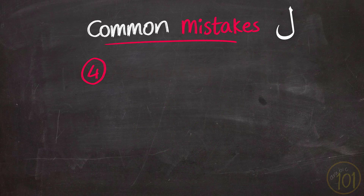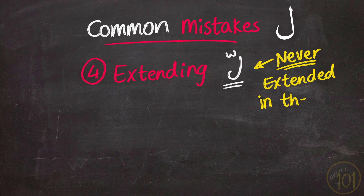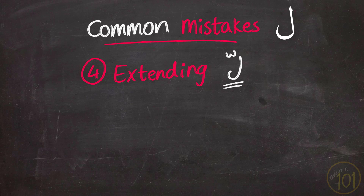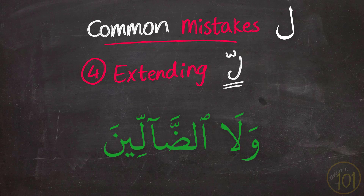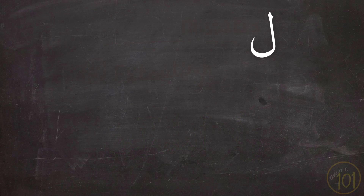The last mistake is elongating the Laam when it has a Shadda. There is no position in the Quran where you should elongate or extend the Laam. Some learners mistakenly extend the Laam to show the Shadda, but it should not be extended. For example, in 'ولا الضالين', the Laam should be pronounced without extending it whatsoever. This was the last common mistake related to the letter Laam.